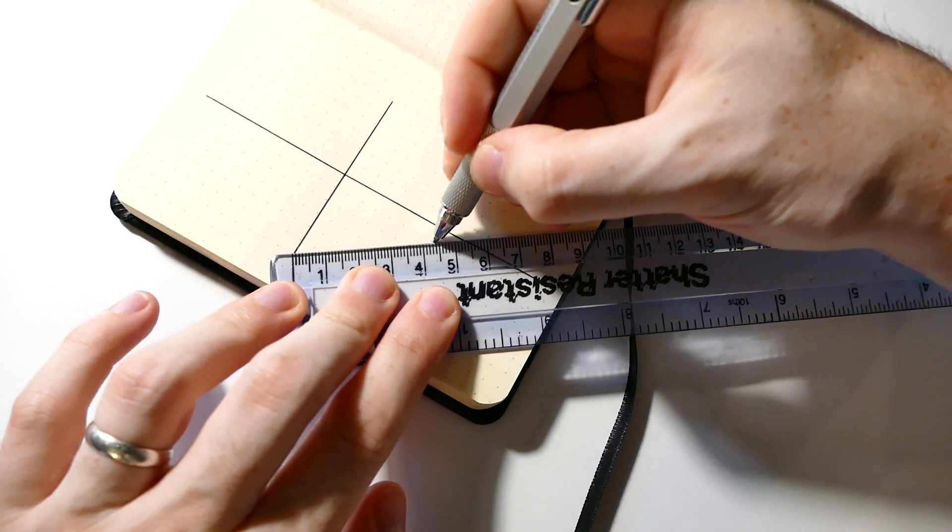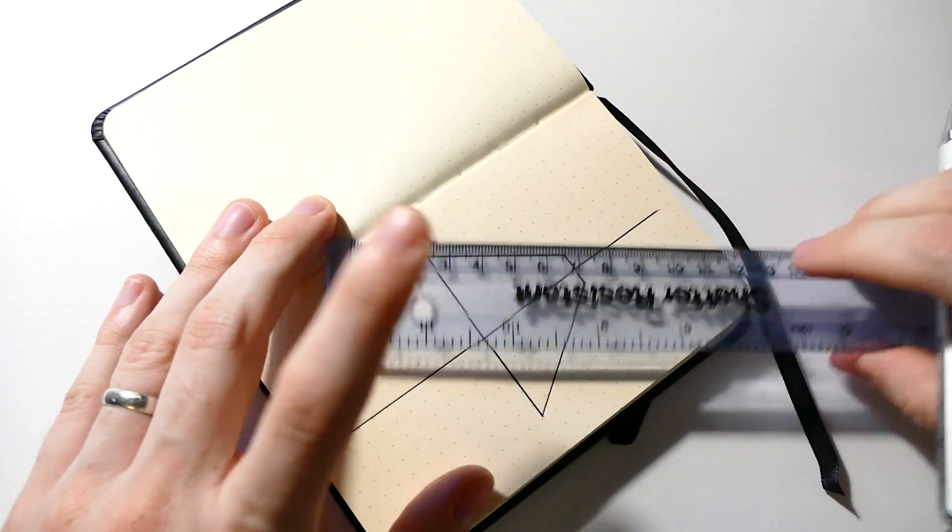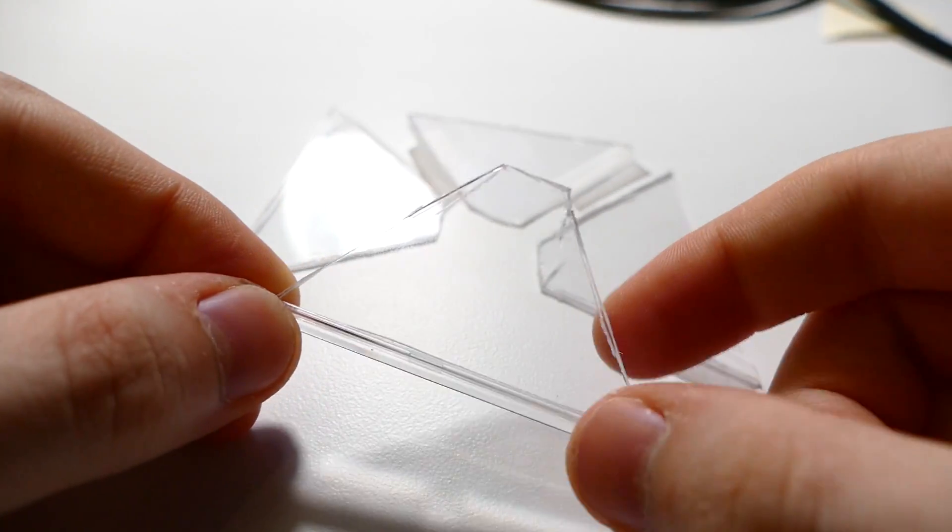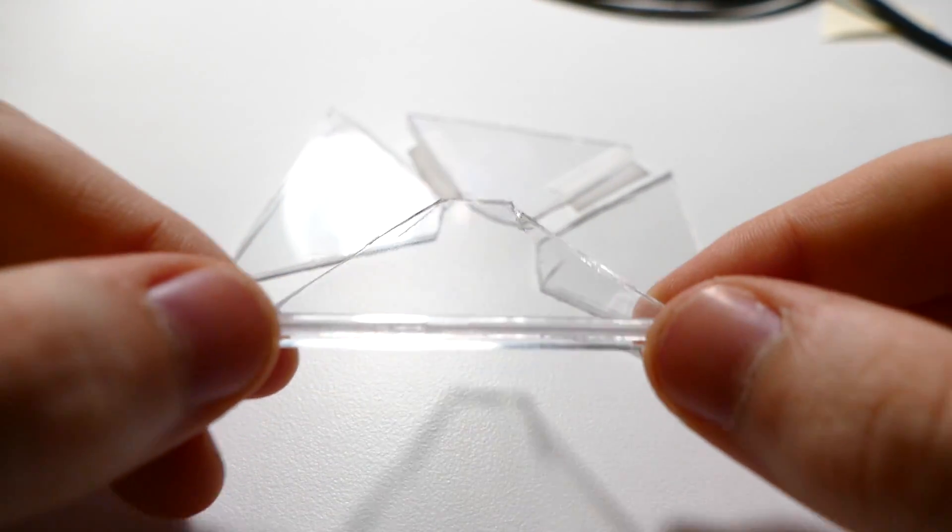You're going to draw this little trapezoid and then cut it out. You're going to do that to trace on whatever clear acrylic surface or plastic surface you're using to make them. I used a CD case.